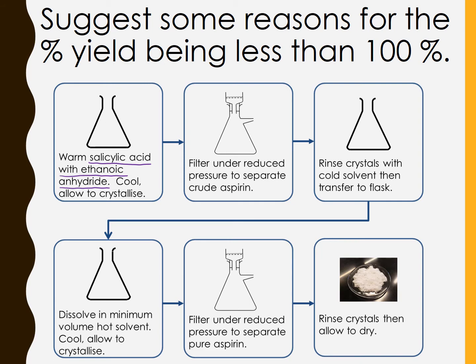Another might be in the filtration step. Imagine transferring from this flask into here, some of that product will be left on the sides of the flask. Some of the product might slip through the filter paper and end up inside the Buchner flask. Rinsing the crystals with cold solvents, some of the crystals might dissolve a little bit and end up in solution. Dissolving in a minimum volume of hot solvent, cool and allowed to crystallize, some of the crystals might not have crystallized and might have stayed in solution. There's lots of places where we might have lost some of the product in all those steps and stages.